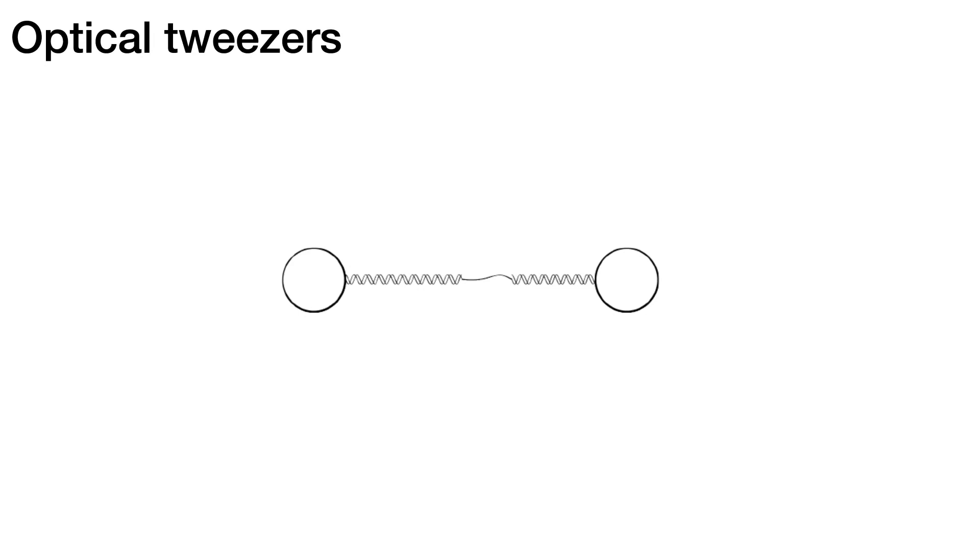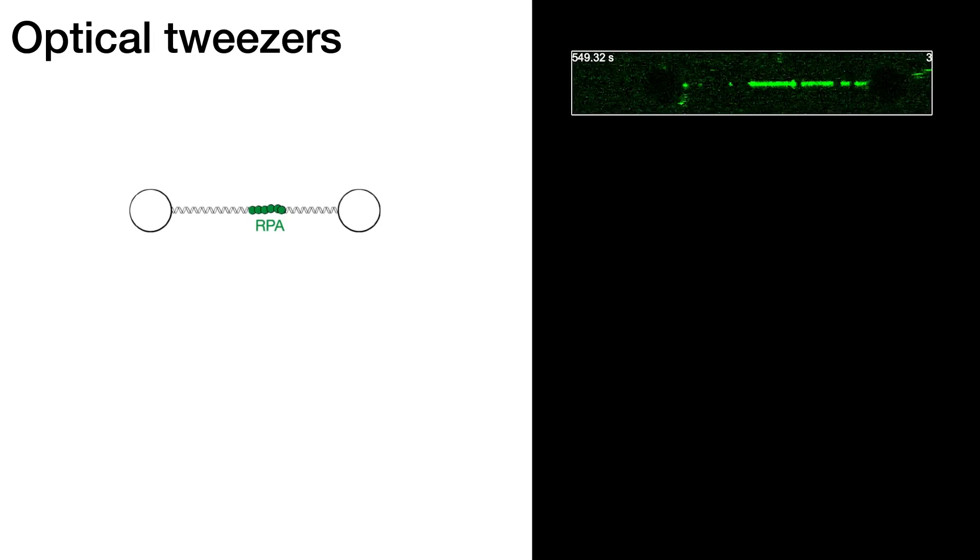We have labeled RPA, single-stranded binding protein, in solution. This fluorescently tagged RPA will coat the single-stranded part, and we can do these experiments repeatedly by pulling and relaxing the DNA. Single-stranded parts get exposed, and double-stranded parts, in this case, remain dark.